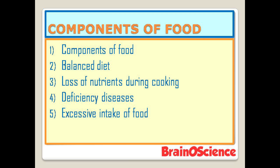The first chapter is food. Food provides energy to our body, helps with growth, repair, and maintenance. In this chapter we will learn about components of food. The main five topics of this chapter are: components of food, balanced diet, loss of nutrients during cooking, deficiency diseases, and excessive intake of food.